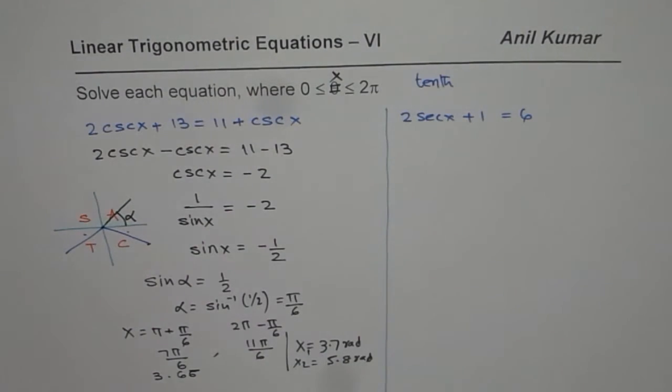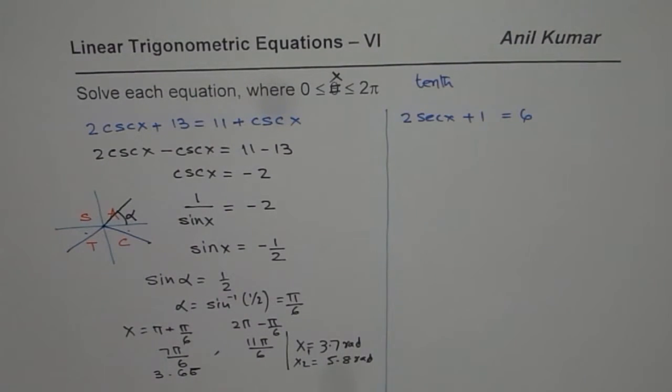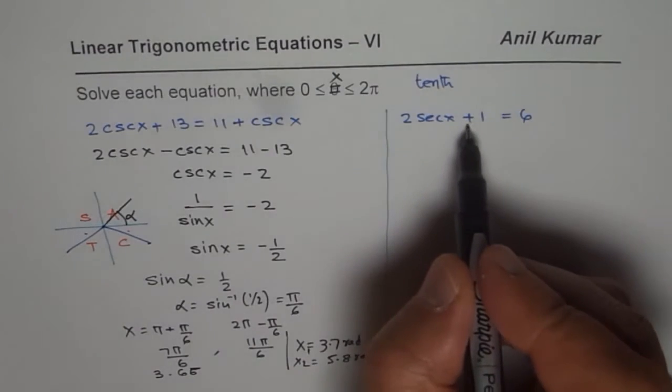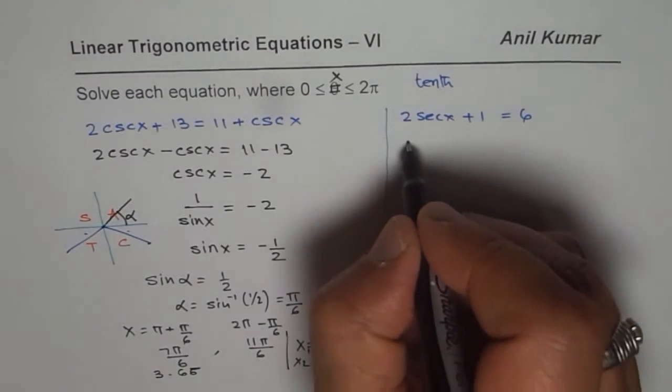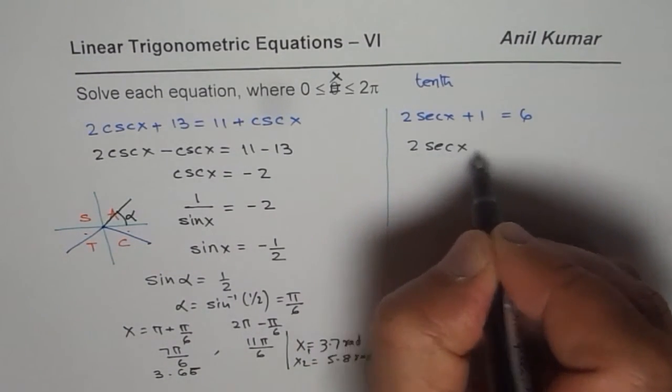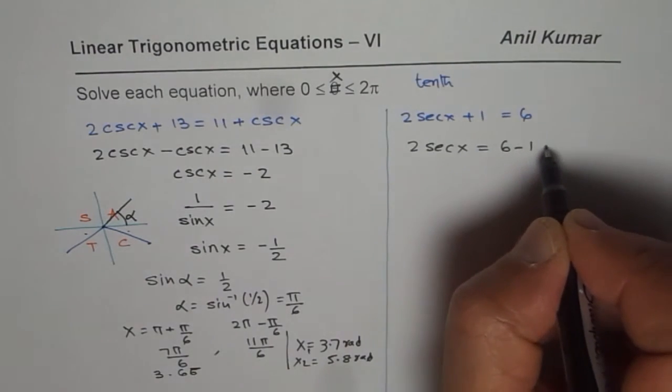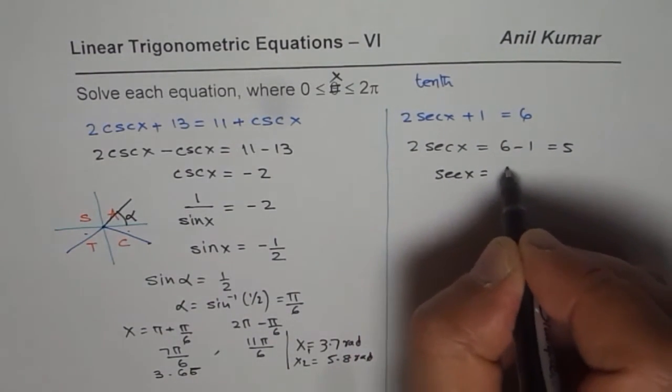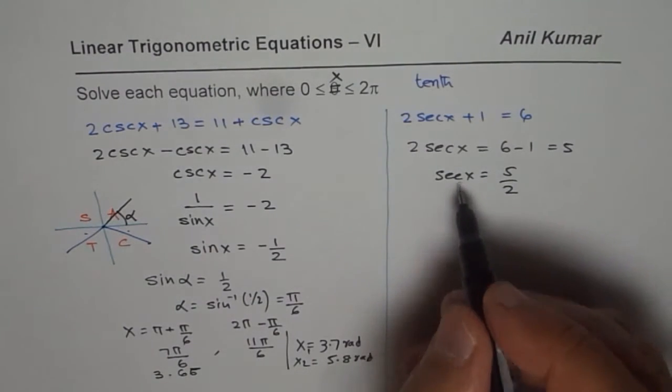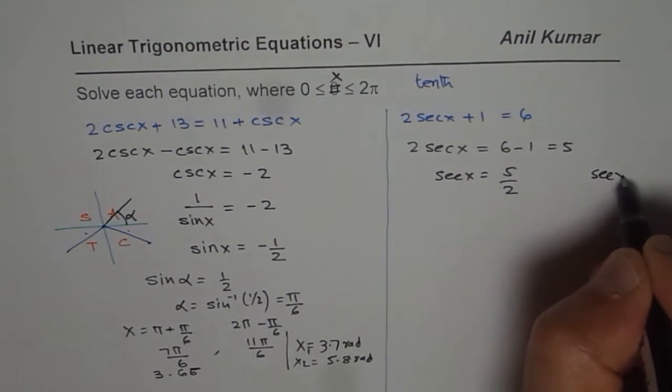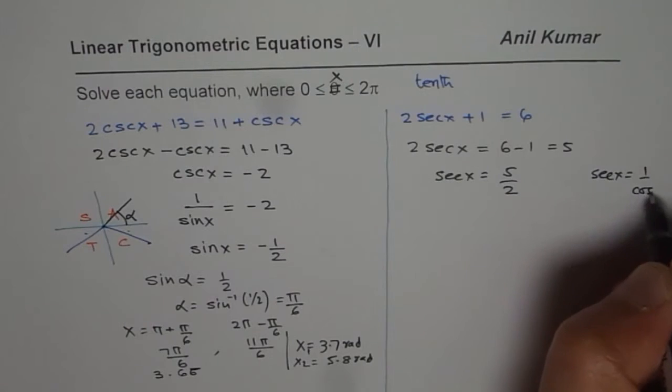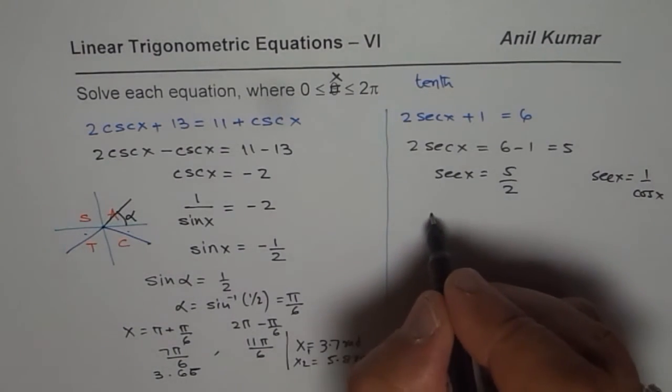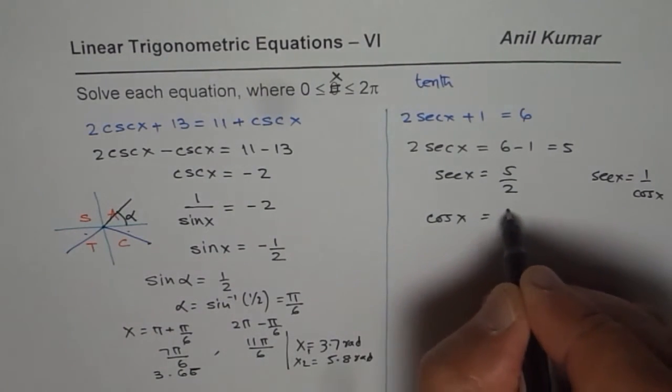We have done one of them. Let us do the next one. 2sec(x) + 1 = 6. So we can say 2sec(x) = 6 - 1, which is 5, or sec(x) = 5/2. Secant x equals 1/cos(x), so we could also write this as cos(x) = 2/5.